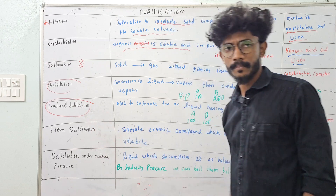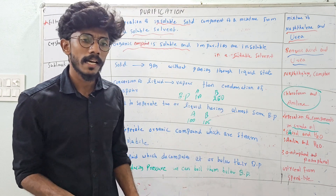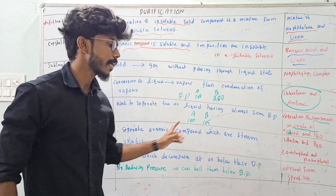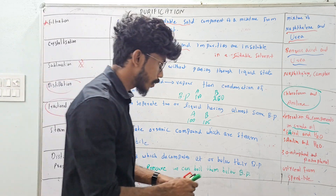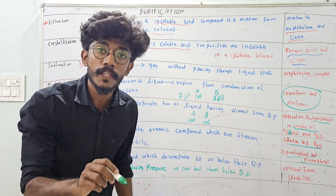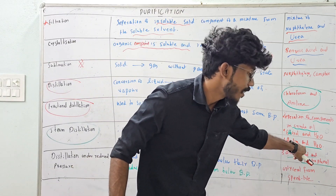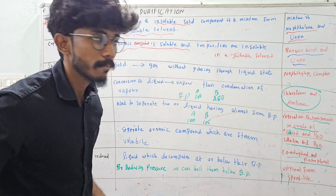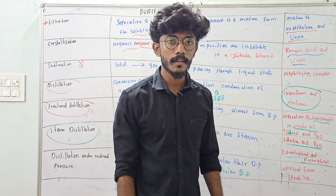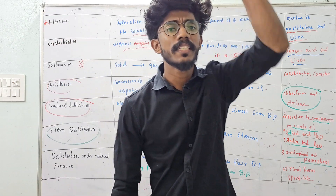The next method is steam distillation. It is used to separate an organic compound which is steam-volatile. The compound is not stable at high heat, so we use steam distillation instead. This method is used to separate ortho-nitrophenol and para-nitrophenol. We can separate them using steam distillation. Another example is aniline and water. Study the table and mark the definition, the method you use, and the example. That is steam distillation — separating an organic compound which is steam-volatile.